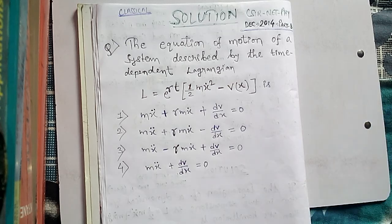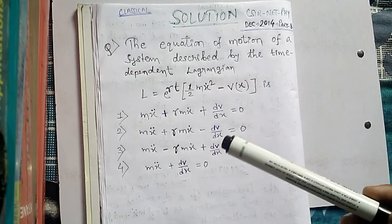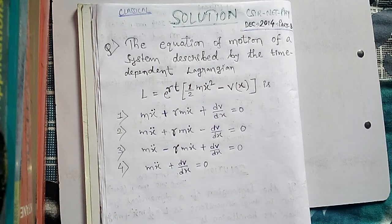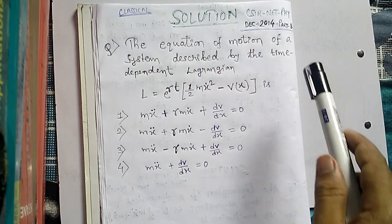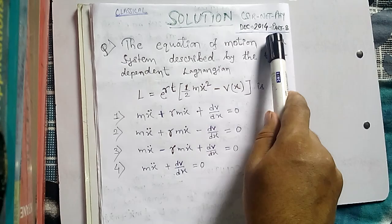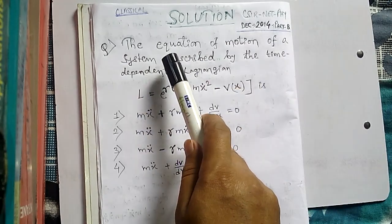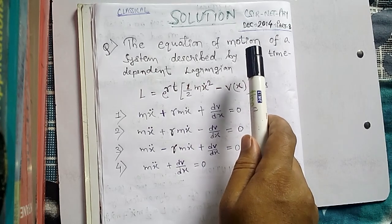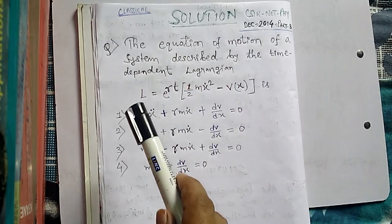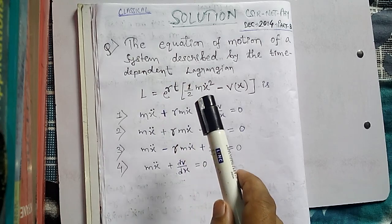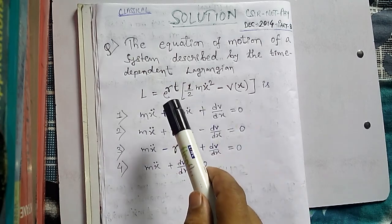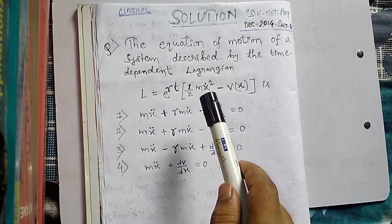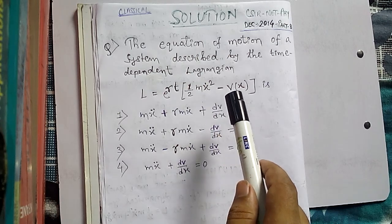Hello friends, this is Vidhan. Welcome to CSIR NET physics solutions. Today we take up a problem of classical mechanics based on Lagrange's equation. It's a problem of December 2014 Part B. The question is: what is the equation of motion of a system when the system is described by a Lagrangian e to the power gamma t, half m x-dot squared minus V(x), where gamma is a constant, t is time, m is mass, x-dot is velocity, and V(x) is the potential energy.